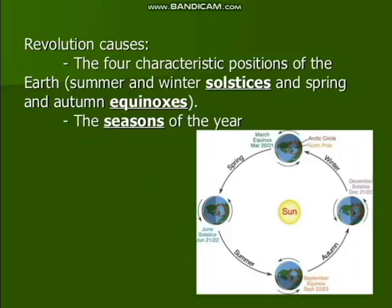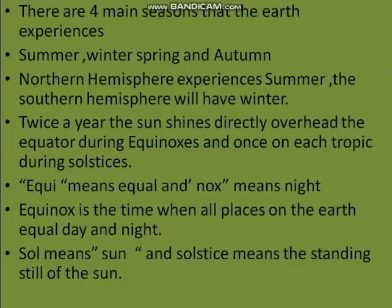What are the seasons of the year? There are four seasons: summer, winter, spring, and autumn. Revolution causes these four seasons. The four main seasons experienced on earth are summer, winter, spring, and autumn.